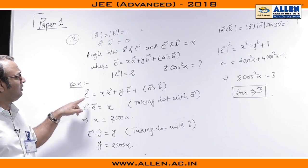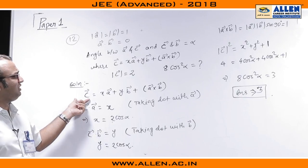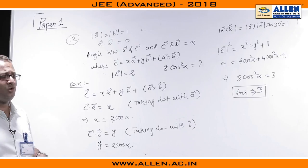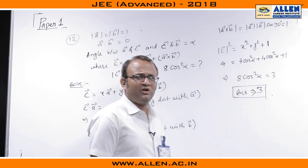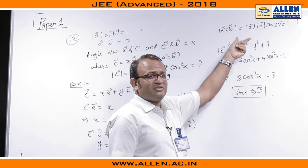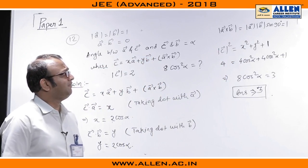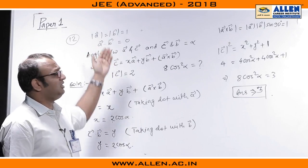Apart from that, we can use the fact that modulus C is equal to 2. For that first let us find out the magnitude of A cross B which is obviously going to be 1 because they are orthogonal vectors, mod A mod B sin theta and theta was given to be equal to 90 degree obviously, because A dot B is 0.